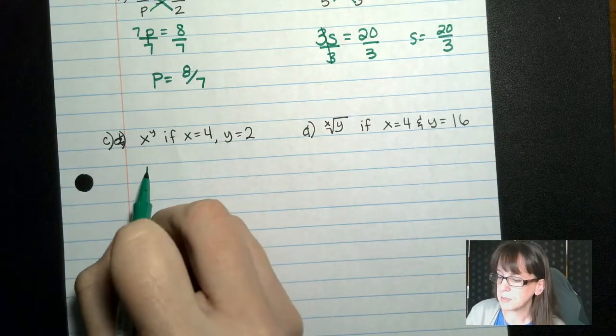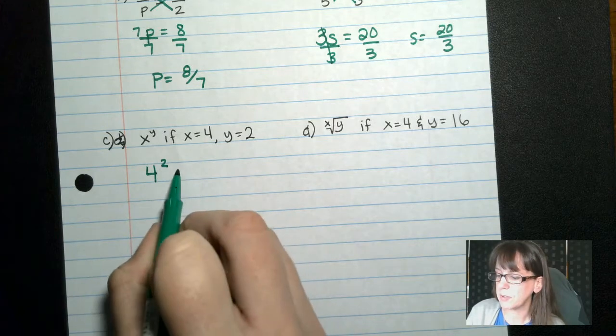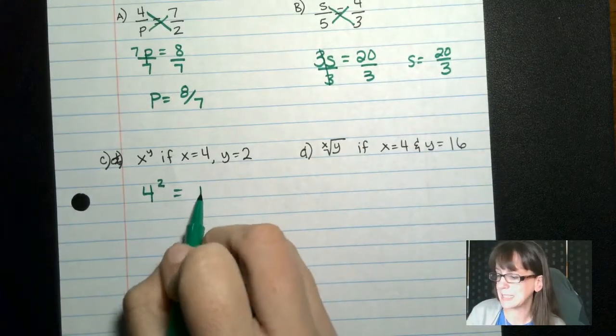x to the y power, if x is 4 and y is 2, if we evaluate that, we would get 4 squared, which would give us 16.